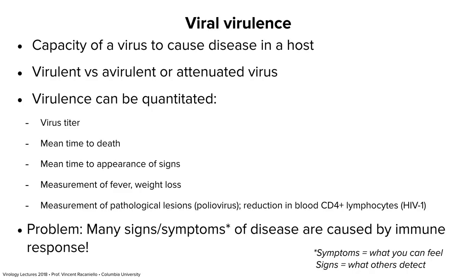We have to quantify virulence in order to compare, say, a mutant virus we're making. There are many ways to quantitate virulence. One is virus titer, though I'm not a big fan of that as a surrogate of virulence, because viruses can replicate without causing disease. Many people will say a virus replicates tenfold higher therefore it's more virulent, but I think you need other measurements like mean time to death or appearance of signs.